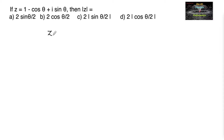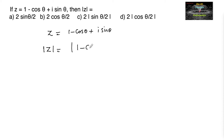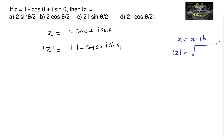If z is equal to 1 minus cos theta plus i sine theta, then modulus of z is equal to modulus of 1 minus cos theta plus i sine theta. Since we know that if z is equal to a plus ib, mod z is equal to square root of a squared plus b squared. So we can write 1 minus cos theta whole square plus sine square theta, all under the root.